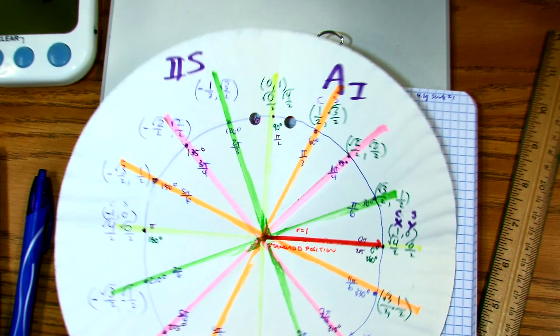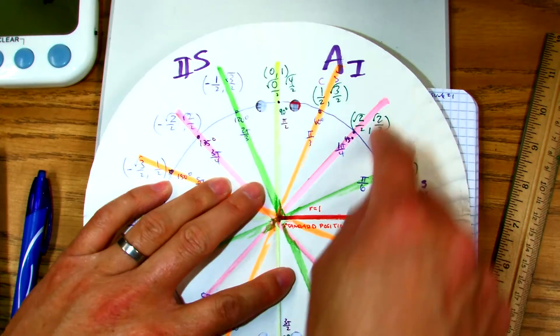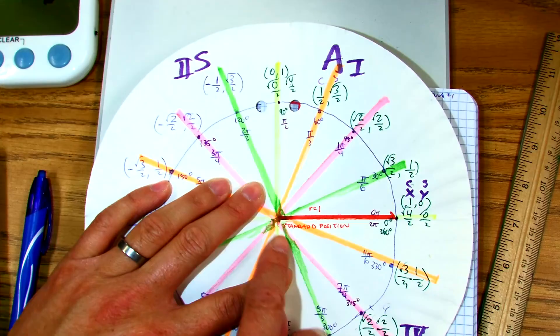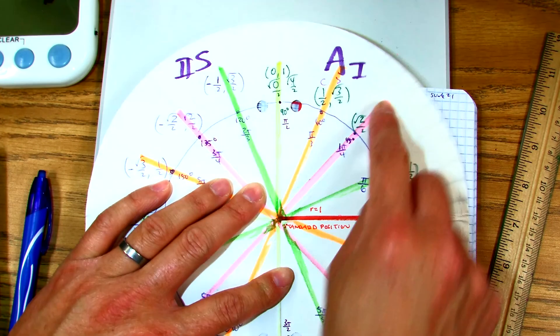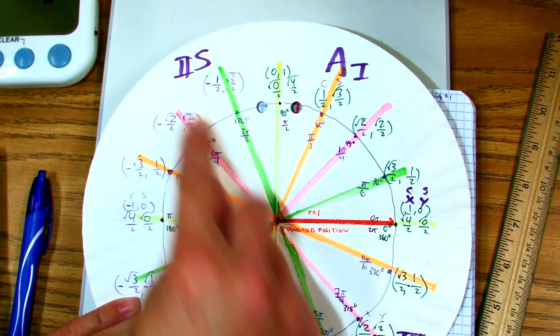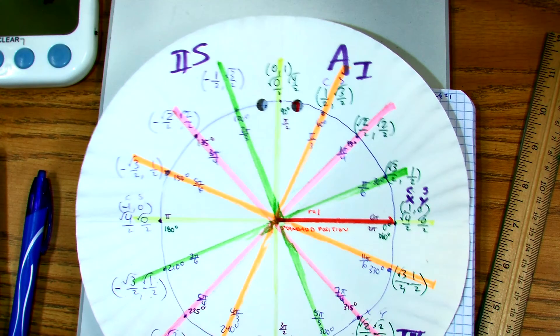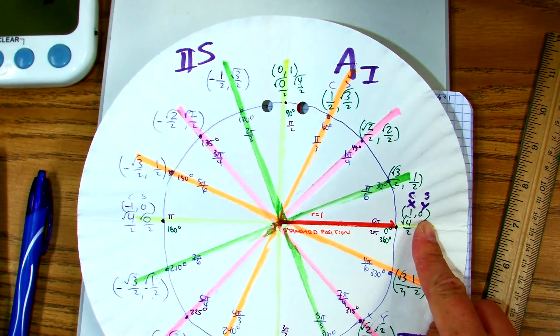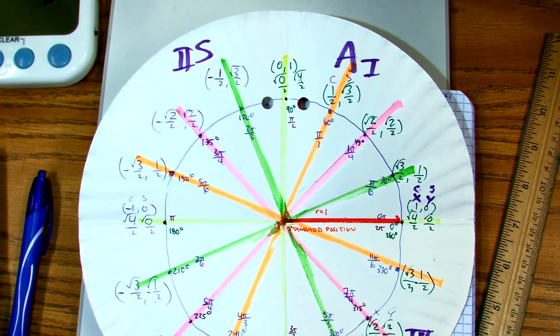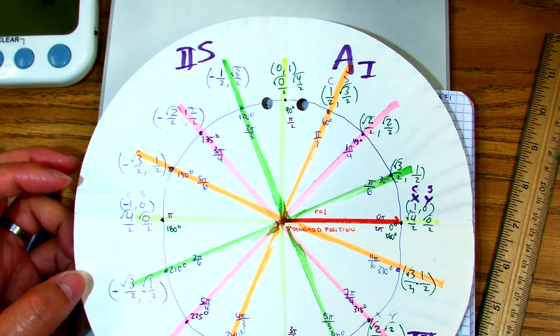So on here, you have all the 45s in pink. So if I'm counting this, I would do something like this. 0 pi over 4, 1 pi over 4, 2 pi over 4, 3 pi over 4, 4 pi over 4, 5 pi over 4, 6 pi over 4, 7 pi over 4, 8 pi over 4. I just counted all the 45s. So that counting technique can help you create this.